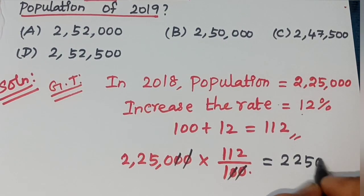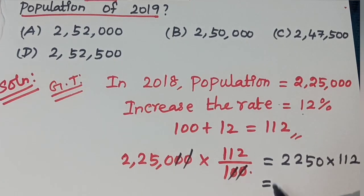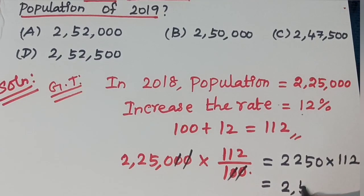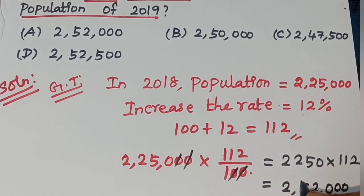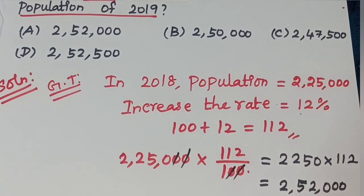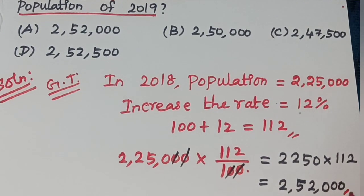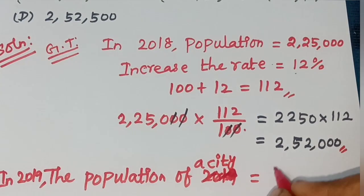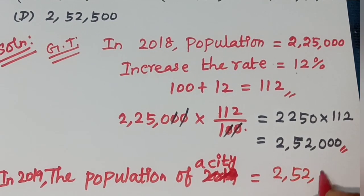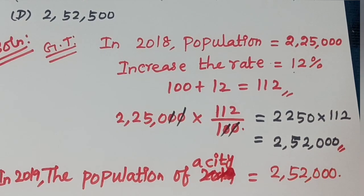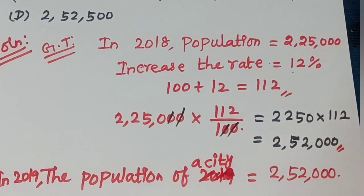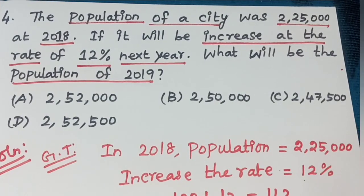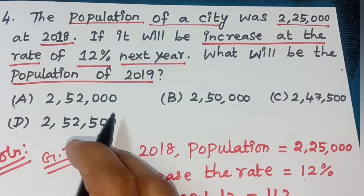2,250 × 112 = 2,52,000. The population in 2019 is 2,52,000. The answer is option A.